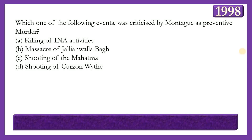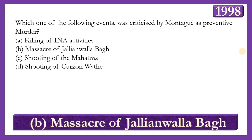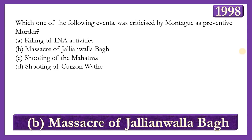Next question: Which one of the following events was criticized by Montagu as 'preventive murder'? Options: killing of INA activists; massacre of Jallianwala Bagh; shooting of the Mahatma; or shooting of the Curzon Wyllie. The answer is option B — the massacre of Jallianwala Bagh — which was severely criticized by Edwin Montagu, who called it 'preventive murder.'